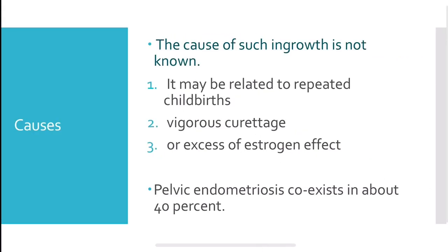The exact cause of such ingrowth is not known. However, it might be related to repeated childbirths, where rupture of the endometrium during delivery can lead to endometrial tissue growing into the myometrium. Vigorous curettage — a procedure done after abortion or miscarriage involving scooping and scraping of the endometrium — can also cause trauma or rupture, leading endometrial tissue to implant into the myometrium.